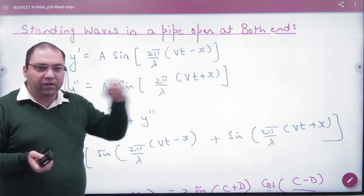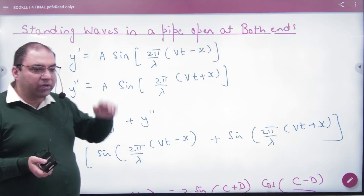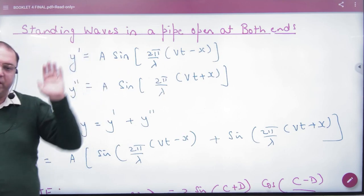The wave went left to right and went back. So because the end is free to move, it is not fixed, it is open in the pipe. Both ends are open.